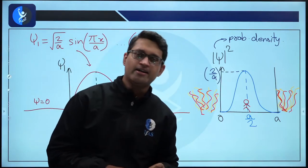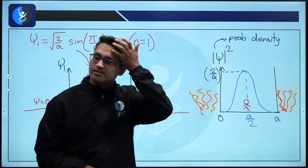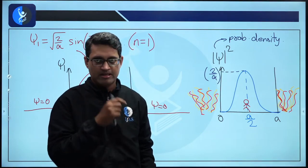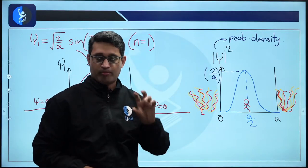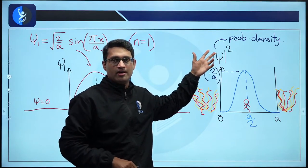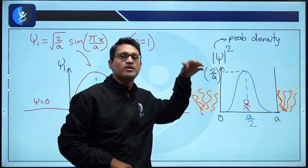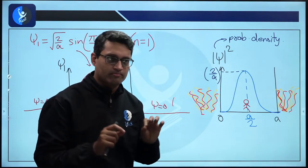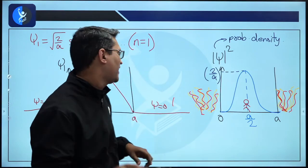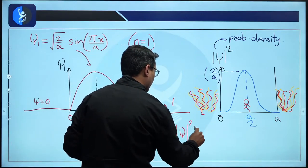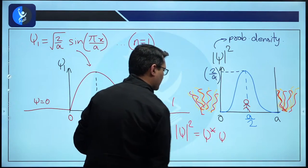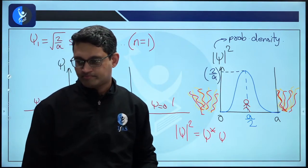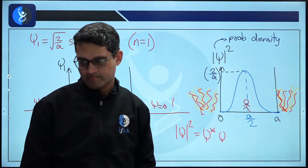Regarding the modulus: wave functions are allowed to be complex in nature. Probability must be a real number, so for a general complex wave function, you should take the modulus squared — or more precisely, psi-star times psi, the product of the wave function and its complex conjugate. For real wave functions, the modulus is not needed, but for a general wave function, you should use psi-star psi.